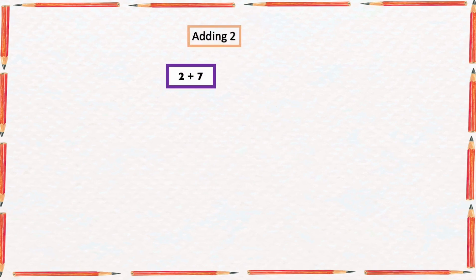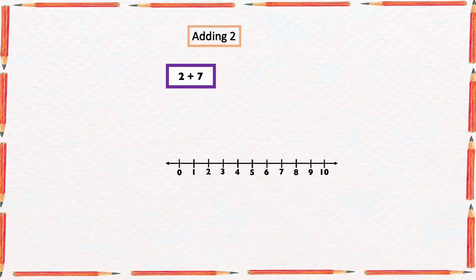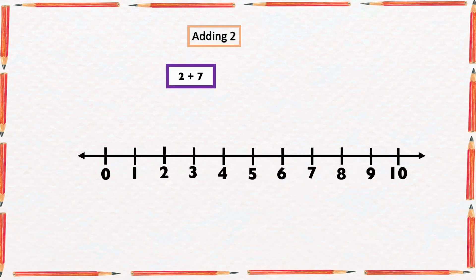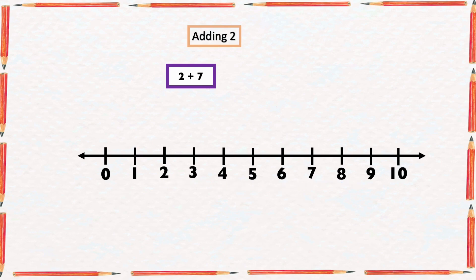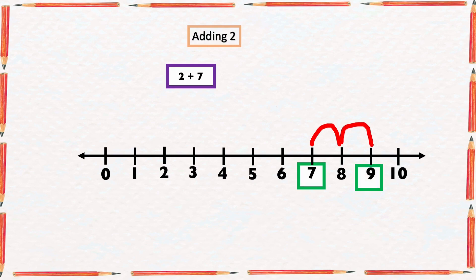Let's look at one more example: 2 plus 7. To find the sum of 2 and 7, we are going to make use of our number line. We could start from 2 and count 7 numbers forward, but that will take us a very long way. So instead, we start from 7, which is the bigger number, and count 2 numbers forward: 1, 2. The arrow ended at 9. So the sum of 2 and 7 is equal to 9.